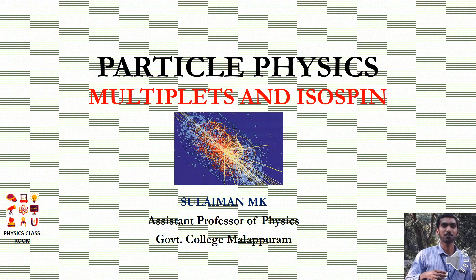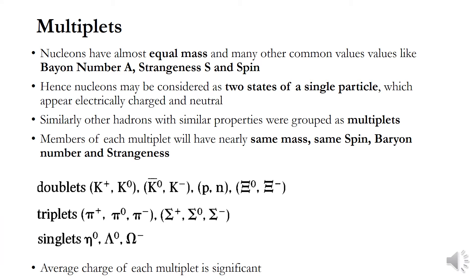Good morning friends. Today we will discuss Multiplets and Isospin in the particle world. First we will see what are Multiplets. We know that nucleons have almost equal mass and many other common values like same Baryon number, same strangeness, and same spin.